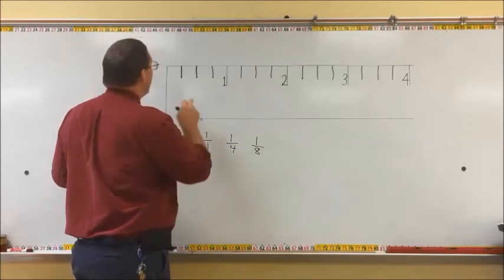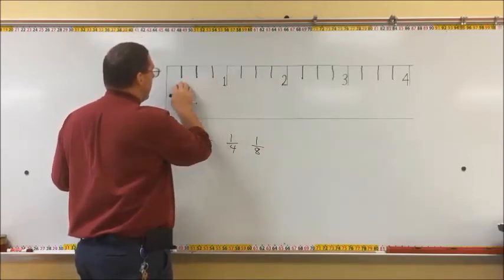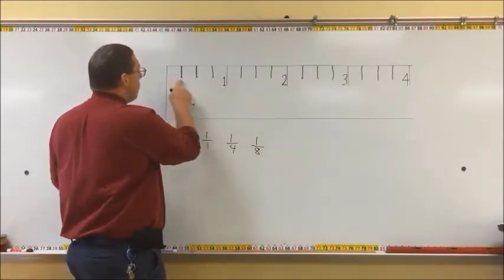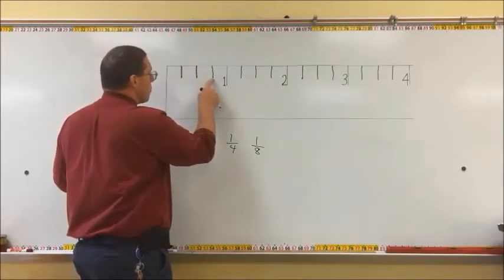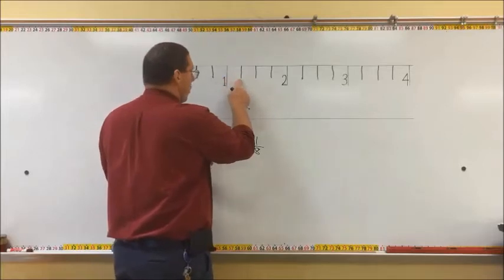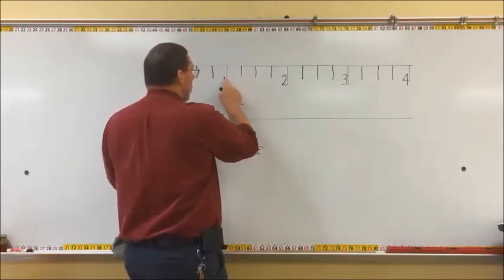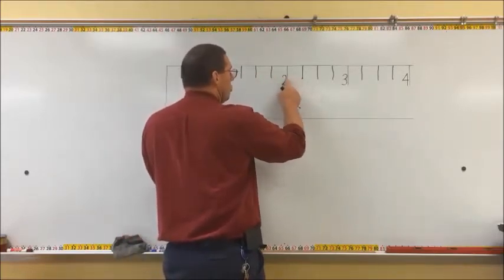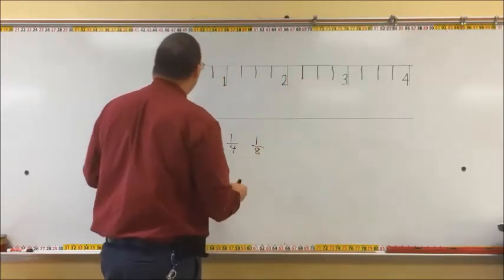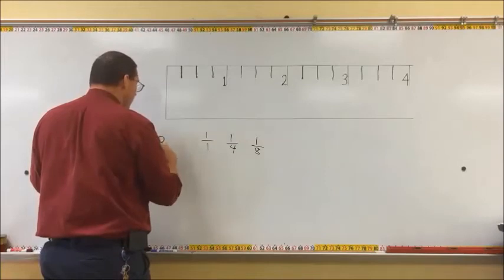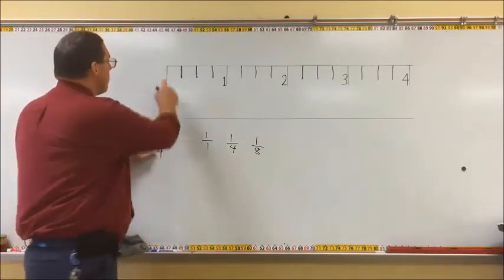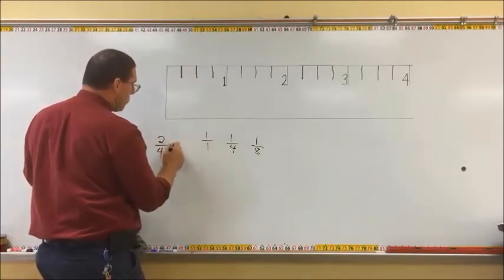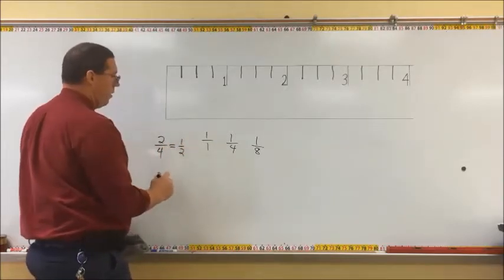So you have to look at all the similar-length lines, and that's what you count along. This is one-fourth, two-fourths, three-fourths, and then one. One and one-fourth, one and two-fourths, one and three-fourths, two inches, two and one-fourth, two and two-fourths. Now I keep saying two-fourths, but what you have to understand is that we never say two-fourths.